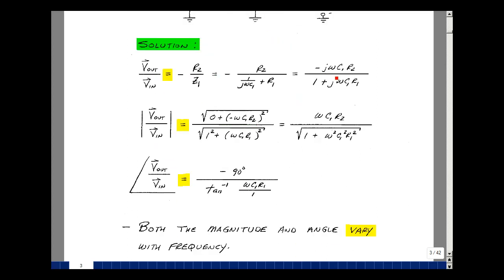The angle is the angle of the numerator minus the angle of the denominator. This is just minus j times something, so it's minus 90 degrees. And then for the denominator, it's the arctangent of the imaginary part divided by the real part. Both the magnitude and angle vary with frequency.